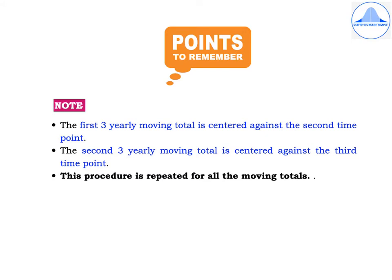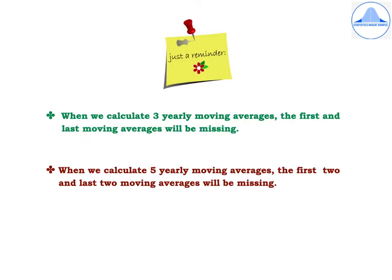Some important points to keep in mind. Firstly, the first three-yearly moving total is centered against the second time point, and the second three-yearly moving total is centered against the third time point; this procedure is repeated for all moving totals. When we calculate three-yearly moving averages, the first and last moving averages will be missing. Similarly, when we calculate five-yearly moving averages, the first two and the last two moving averages will be missing.